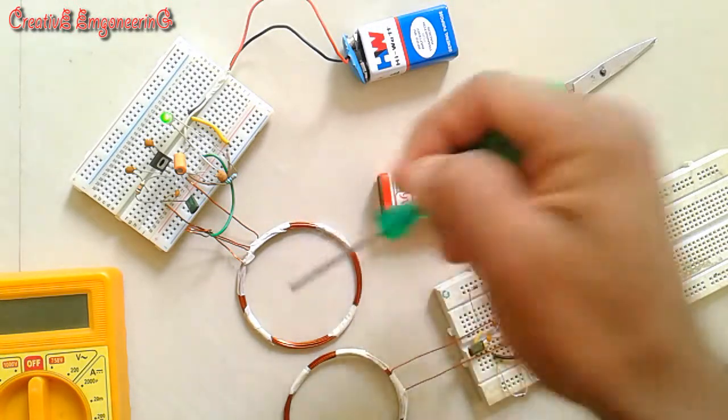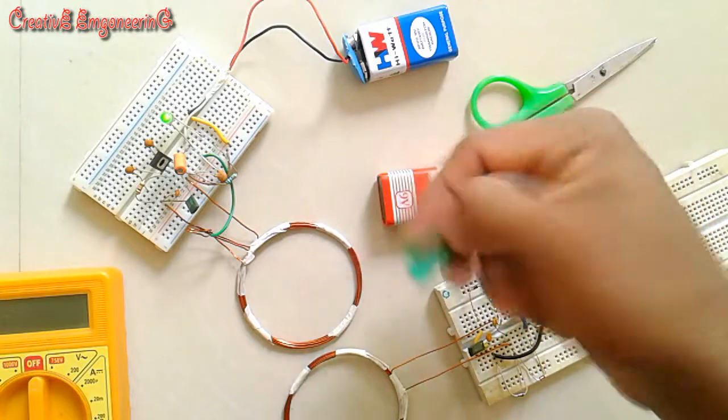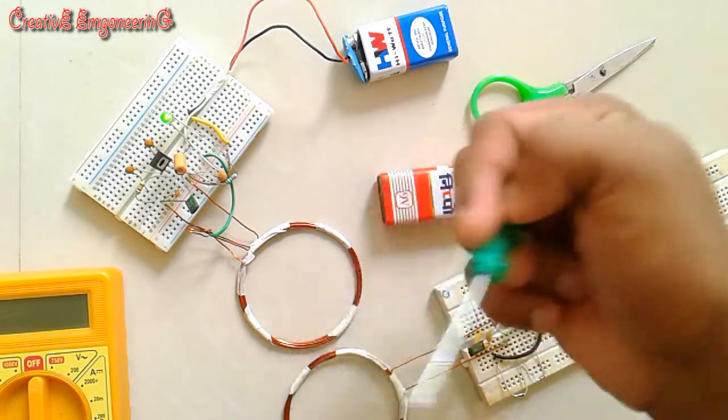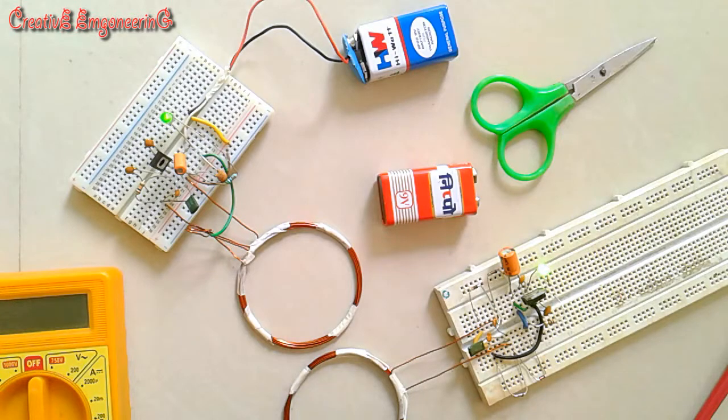Then there is a magnetic field produced around the coil - a fluctuating magnetic field around this coil. So this fluctuating magnetic field is received by this secondary coil.